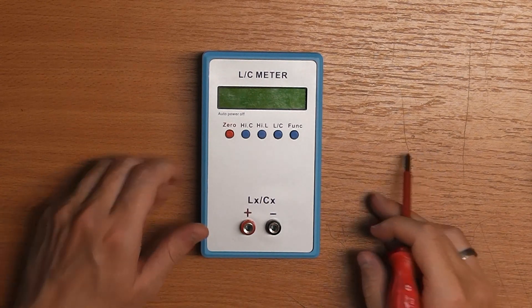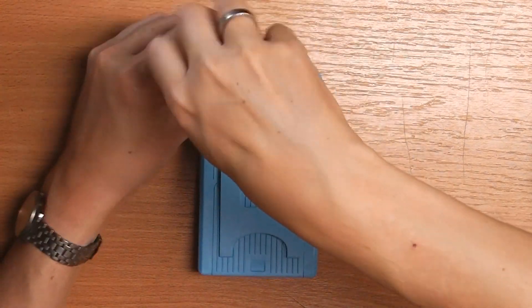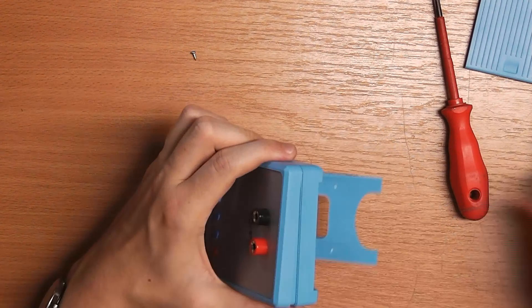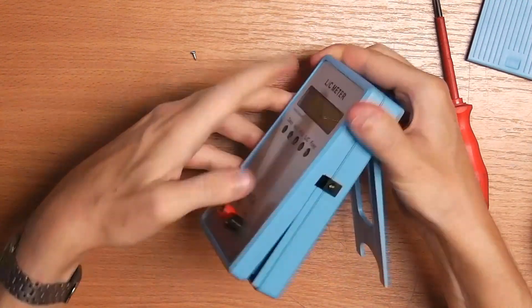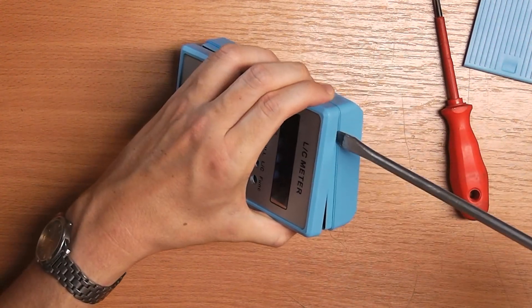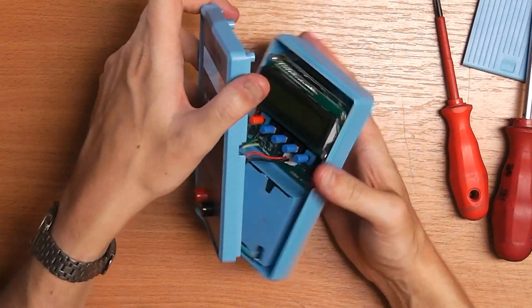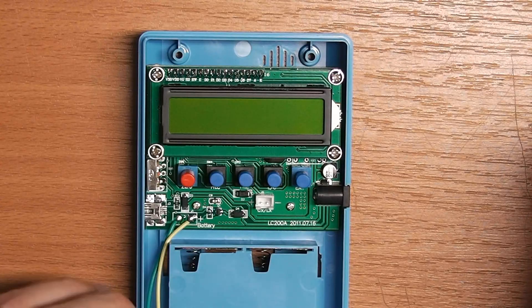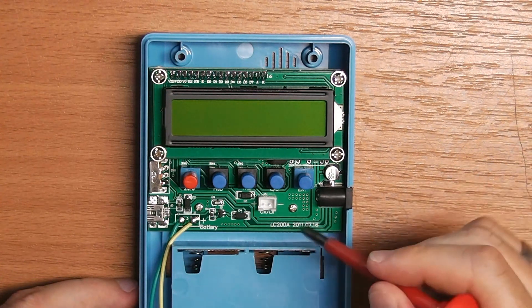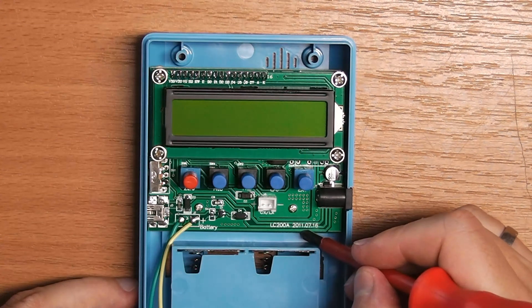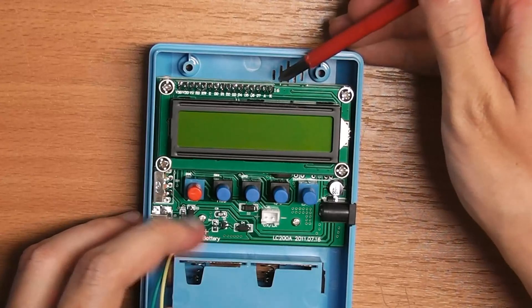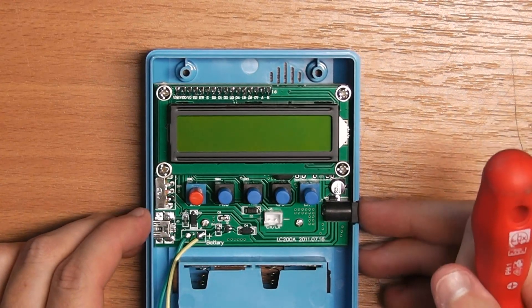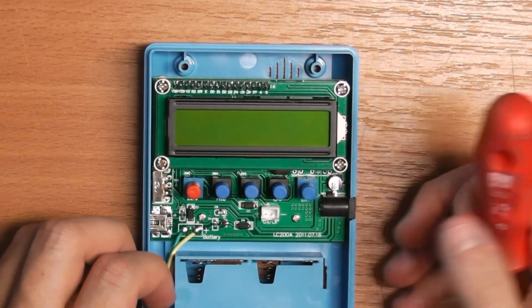So now the more interesting part, the LC meter itself. I'm surprised what we are going to find there. So now that it's open it really doesn't make that bad of a first impression. We see on the silk print it's the LC200A and the date code is 20110716. Up here is a display from the silk print and the signals I'm guessing this is a standard HD447 compatible LCD display. I'm going to take the whole circuit out now and we can see what it's comprised of.